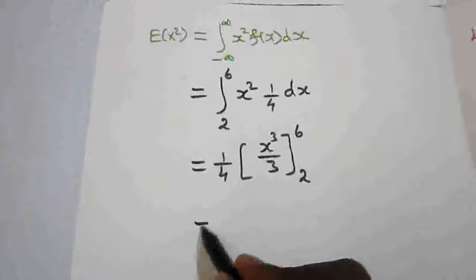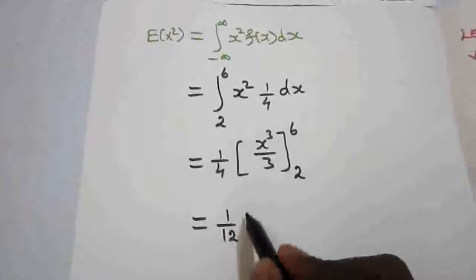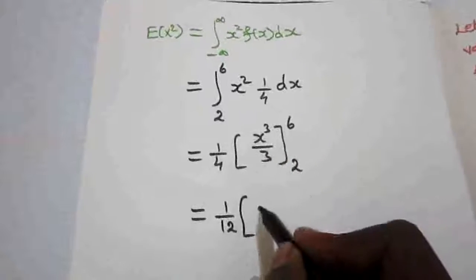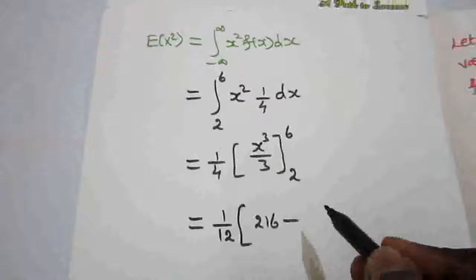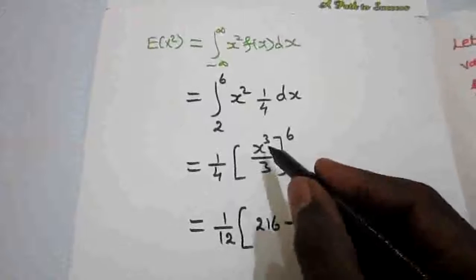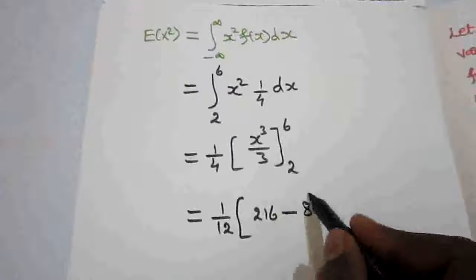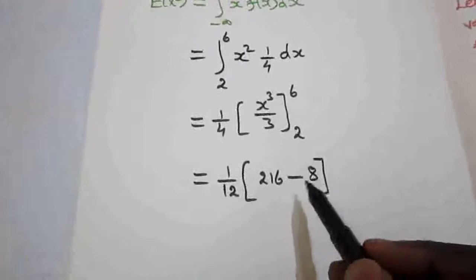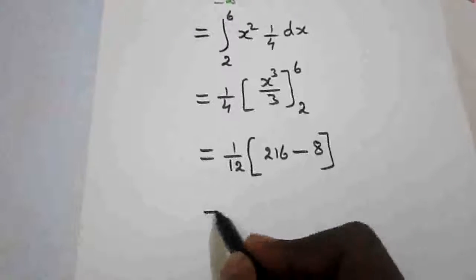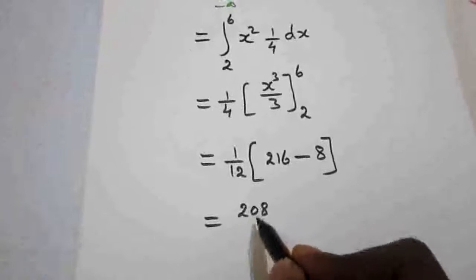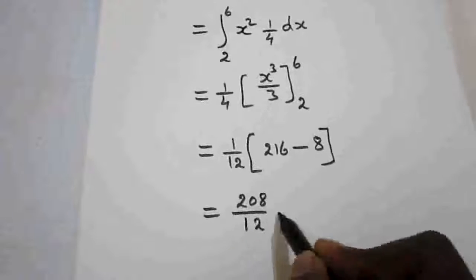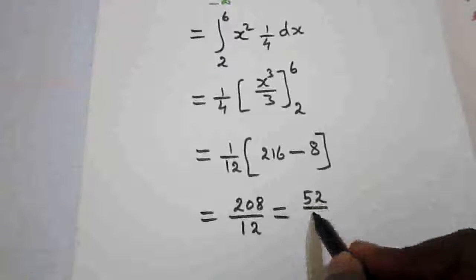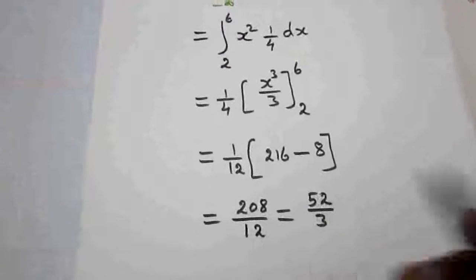Taking 3 outside gives 1/12. Substituting the upper limit: 6³ = 216. Minus the lower limit: 2³ = 8. So 216 − 8 = 208. Then 208 divided by 12; cancelling by 4 gives 52/3. So E(x²) = 52/3.